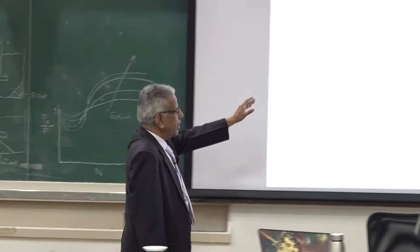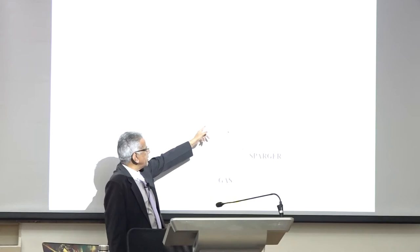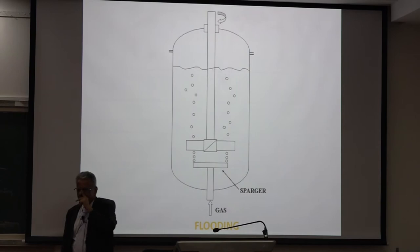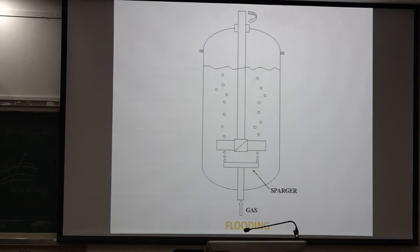Let me show you pictures for gas-liquid dispersion in a stirred tank. This is a sparger — gas enters and there is a ring distributor with holes; bubbles form and the impeller is stationary. When the impeller is stationary, it does nothing, and bubbles move upwards with perhaps some radial movement.